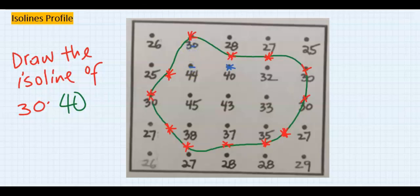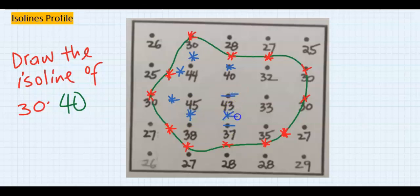Let's try 40. With 40: this is 40, this is 30 and this is 44 — hence we got 40 here. This is 30 and this is 44, that means we have 40 here. Next, this is 30 and this is 45 — in between we got 40. This is 38 and this is 45 — in between we got 40. This is 37 and this is 43 — in between we got 40. This is 33 and this is 43 — in between we got 40.